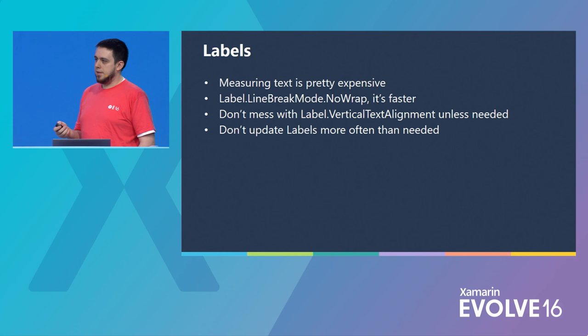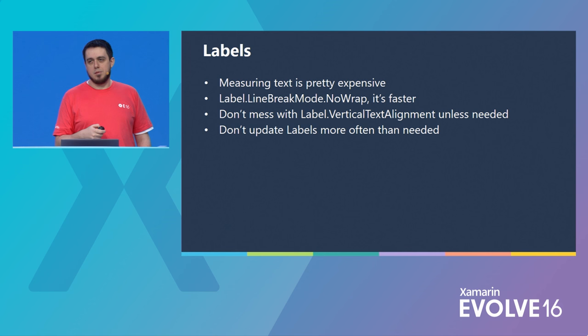When talking about labels, measuring text is expensive — fewer labels are better. Use the spans. Turn off wrapping — it's even faster. Don't use the vertical text alignment unless you need to; the default vertical text alignment cuts out an entire measurement cycle. Try to update labels minimally, and if you do have to update them, update them all at once, because those update cycles are expensive but we do queue them all up together.